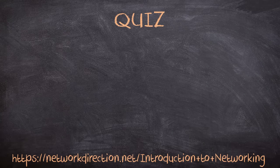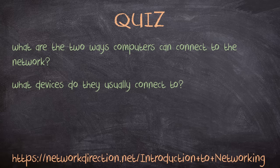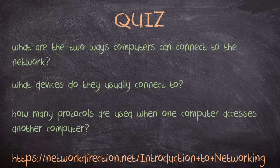We're going to start with some simple questions to get the brain working. Firstly, what are the two ways computers can connect to the network? To follow on from that, what devices do they usually connect to? And finally, how many protocols are used when one computer accesses another computer? When you're ready to see the answers, follow the link at the bottom of the screen.